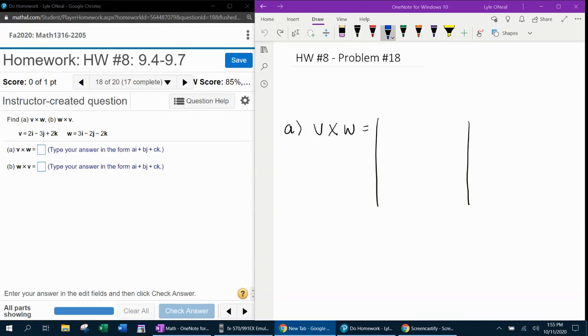All right, here we go. Question number 18 from our 1316 homework number 8 in MyLabMath. They want us to find the cross product V cross W and then W cross V. So we have our two vectors, V equals 2I minus 3J plus 2K and W equals 3I minus 2J minus 2K.